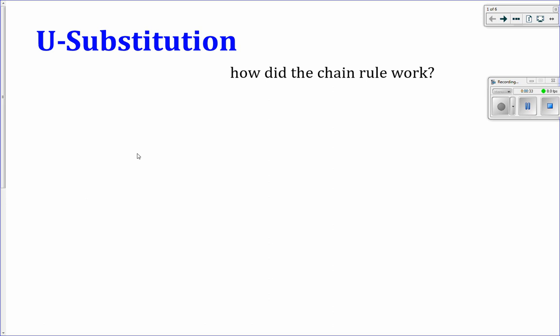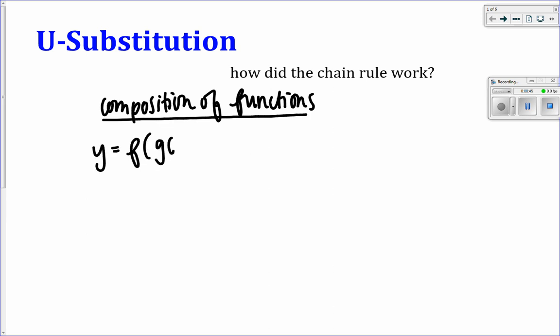So the chain rule worked when we had composition of functions. If we had something like y is equal to f composed with g of x, something inside something else. So remember, for example, like cosine of x cubed. And the chain rule said y prime is equal to the derivative of the outer with the inner still inside times the derivative of the inner thing.